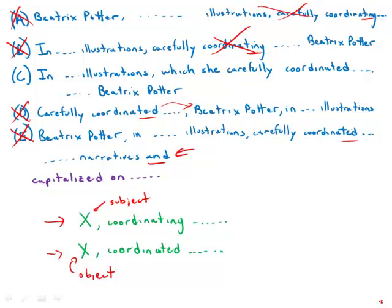That leaves us with C. In her illustrations, which she carefully coordinated. Perfectly correct. Subject right next to the main verb. Option C is free of grammatical error. It is direct, powerful, beautiful, sleek. It is the best answer choice.